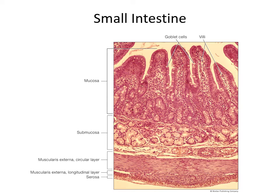Moving into the small intestine, we're going to see a new feature which is villi. These are finger-like projections of the mucosa and some of the submucosa. These serve to help increase the surface area in the small intestine to facilitate digestion and absorption. So again we have mucosa, submucosa, and our muscular layers — outer longitudinal and inner circular — and the serosa, which is the connective tissue around the outside.